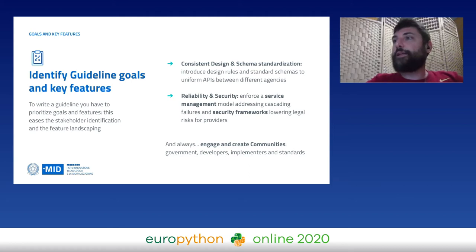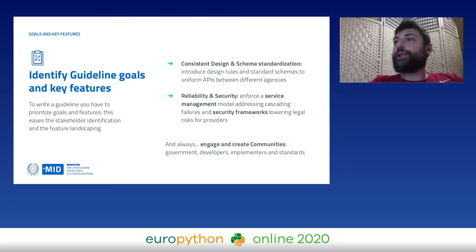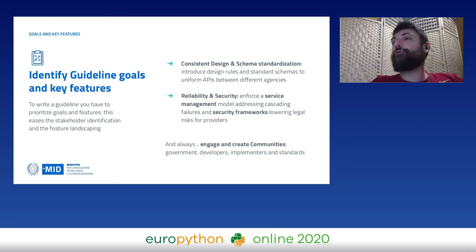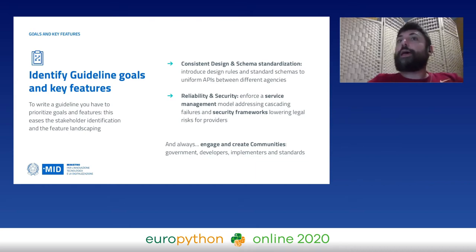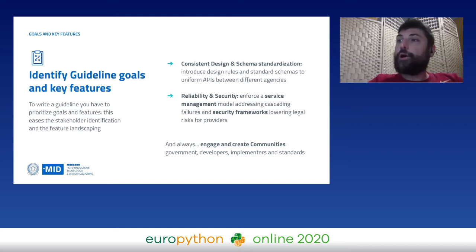Another theme is reliability and security — we wanted to enforce a service management model to address cascading failures, and we needed security frameworks that lower the legal risk for providers. If you don't have a consistent set of security rules, agencies won't provide APIs because they will be afraid of data breaches, GDPR regulation, and data protection issues, and they will avoid serving citizens. All this should be done by engaging and creating communities both in government, for developers, implementers, and standards.